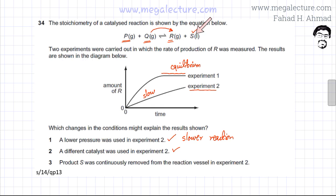And even if S is being removed, the equilibrium would shift in the forward direction. So more R would be produced. We are looking for reasons why the amount of R or the rate of production of R has slowed down. So this option three seems to be incorrect. So if only one and two are correct, the correct option according to the marking key is going to be option B. Only statements one and two are correct.